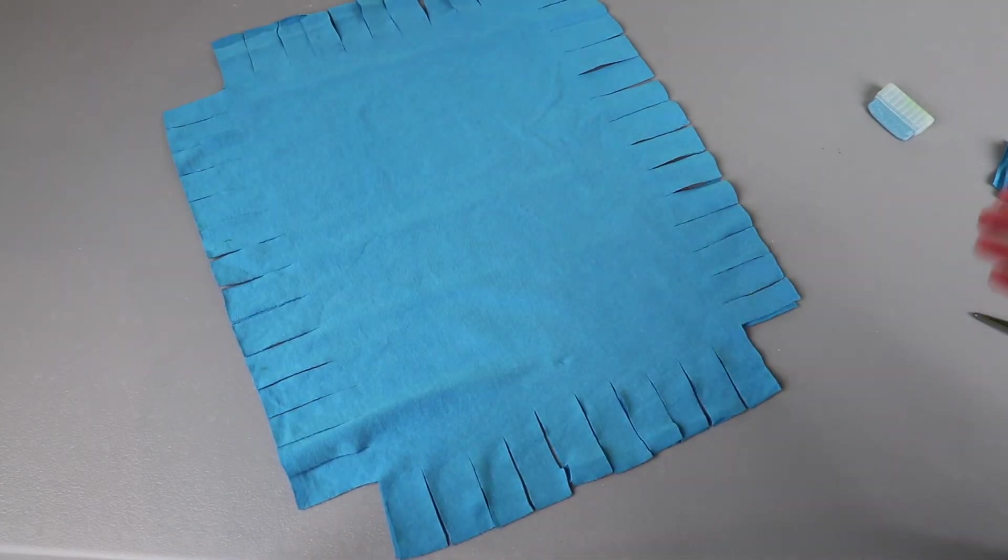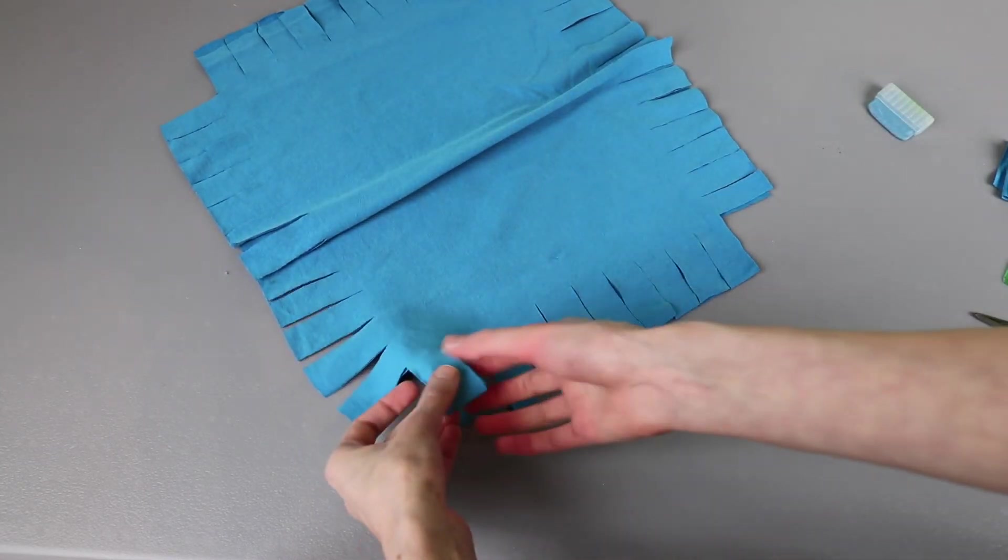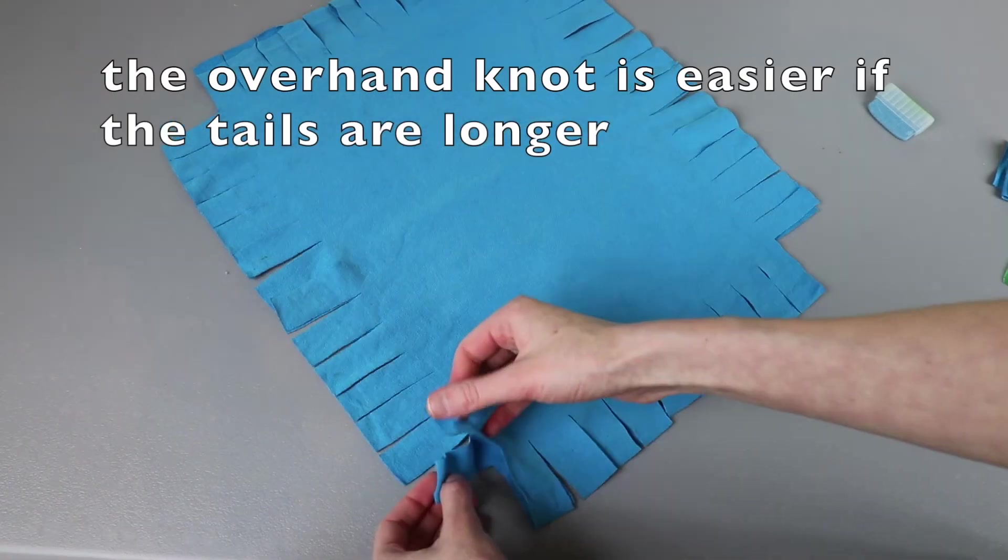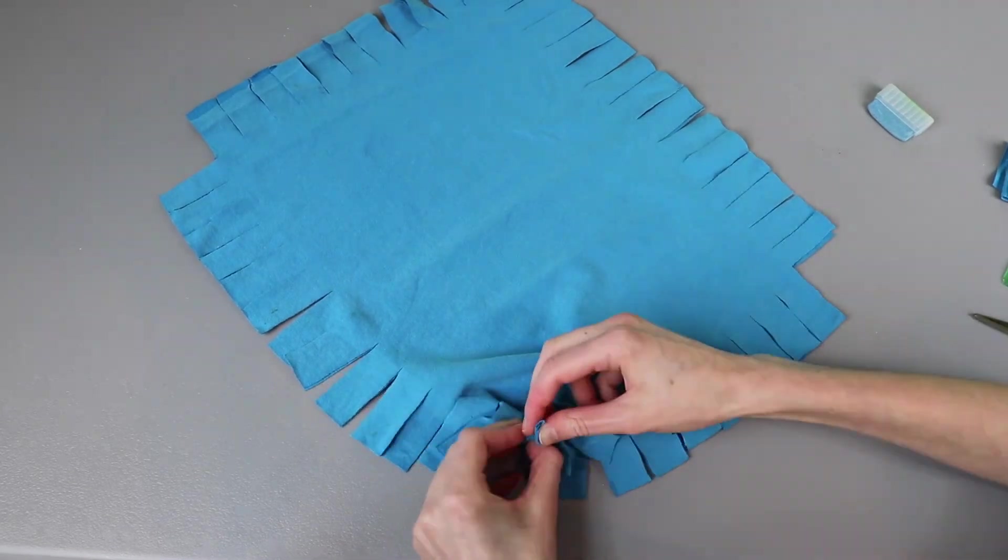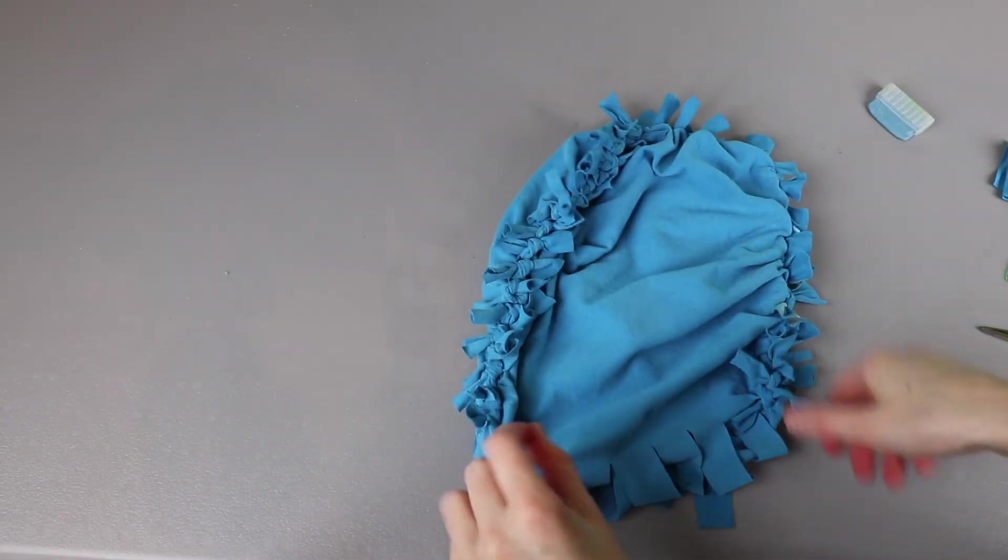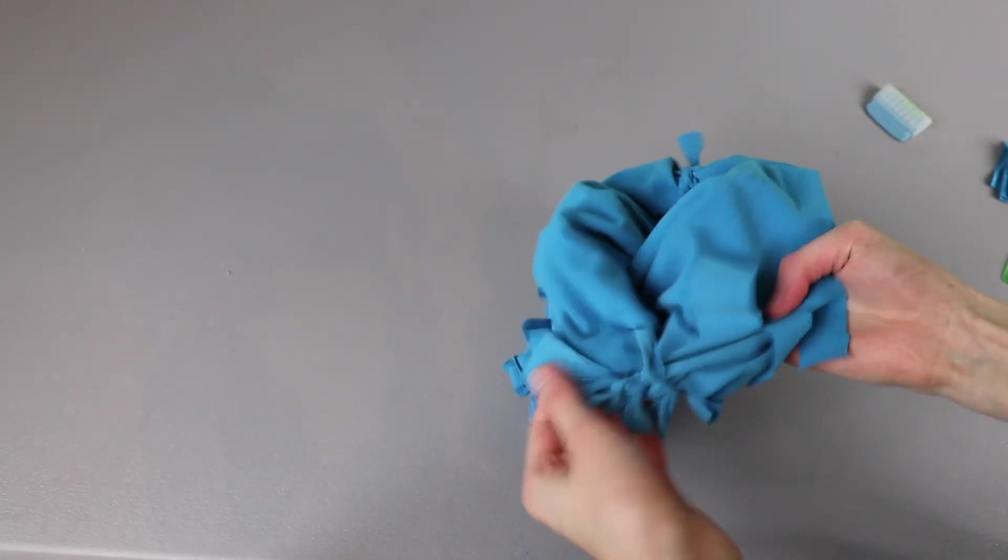Once we have all of our fringes cut it's time to tie the sides together. You can tie in different ways. You can tie it like we did the t-shirt that we turned into a tank top. Or you can hang on to both of them and do a basic overhand knot. I'm going to tie them together like I did the t-shirt. So once you finish tying up three sides leave the one side open, go ahead and stuff it, and then finish tying the last side so it will look like this.